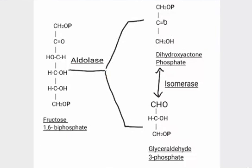Here the energy investment phase ends and the splitting phase begins, where fructose-1,6-bisphosphate is split into two three-carbon containing molecules. In the presence of the enzyme aldolase, fructose-1,6-bisphosphate is split into dihydroxyacetone phosphate and glyceraldehyde-3-phosphate.